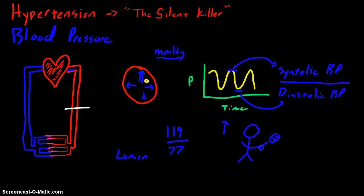So having a high blood pressure at one moment in time does not actually mean that you have hypertension. Like we said in our definition, hypertension occurs when blood pressure is chronically elevated over what is normal — so it needs to be over time.